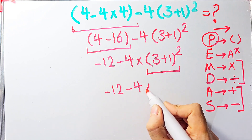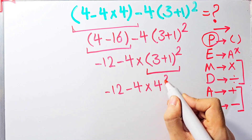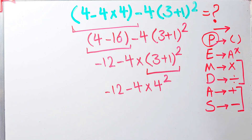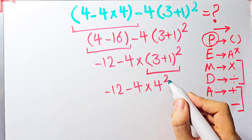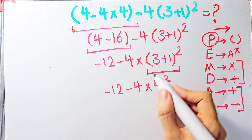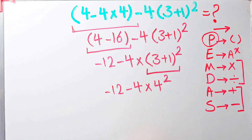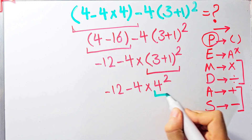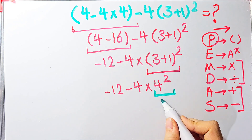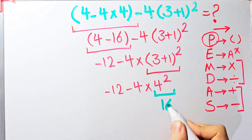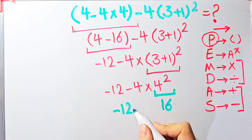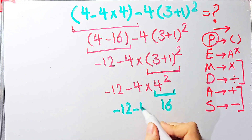In this step we have subtraction, multiplication, and exponent. First we simplify the exponent: four to the power of two equals sixteen. Now we have negative twelve minus four times sixteen.